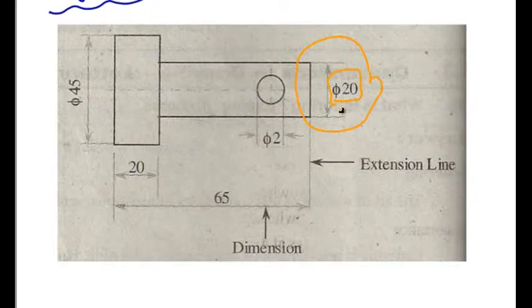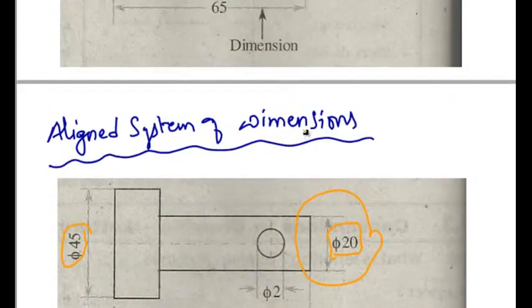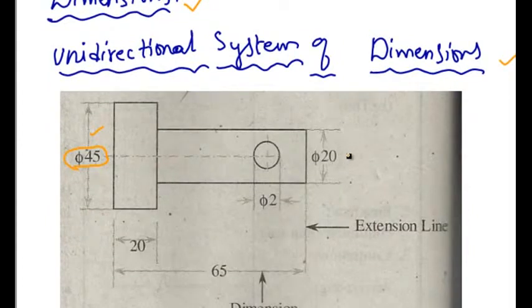It is not compulsory that the dimensions are horizontal. They may be vertical also. But in unidirectional system of dimensioning, it is compulsory that the dimensions are placed in a horizontal pattern.